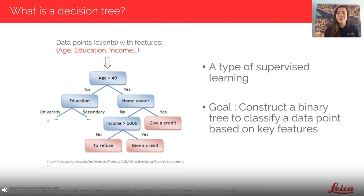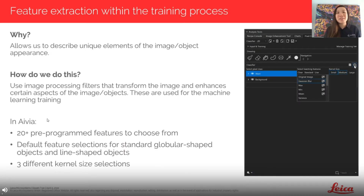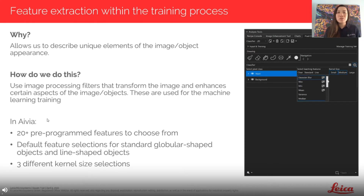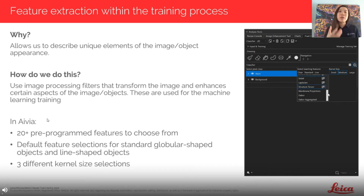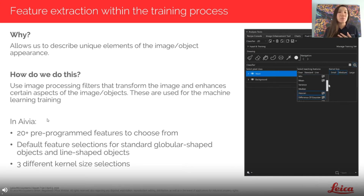So what does a 'feature' actually mean in microscopy images and why do we use them? Features allow us to describe the unique characteristics of your object or your image in a systematic manner. The process takes a number of image processing filters and applies them to your image, transforming it and enhancing certain key characteristics of the object you're trying to detect. These transformed images are then fed into the learning process to create the decision tree and random forest. In Avia, we have over 20 teaching features available.